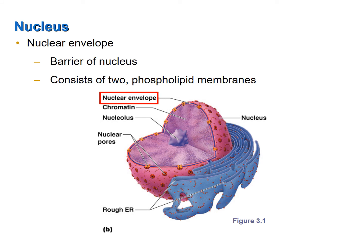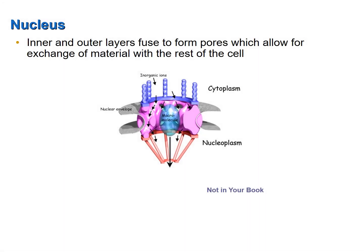The nuclear envelope separates the nucleus from the cytoplasm. It is an effective barrier, controlling the flow of materials into and out of the nucleus. The nuclear envelope is composed of two membranes, each very similar in structure to the plasma membrane. It contains nuclear pores, which allow molecules to move between the nucleus and cytoplasm. These pores are formed by the fusing of the inner and outer layers of the nuclear envelope.